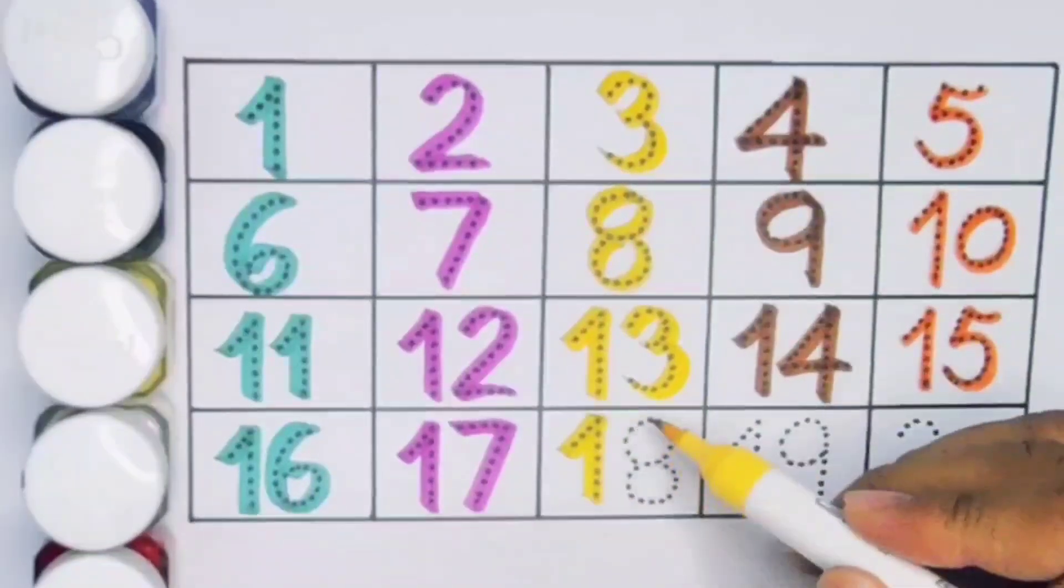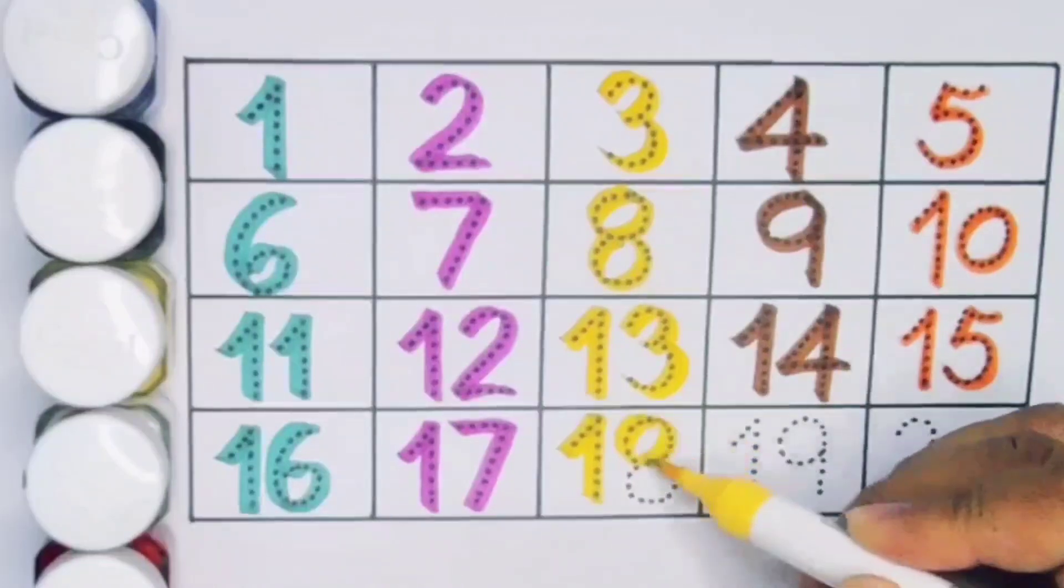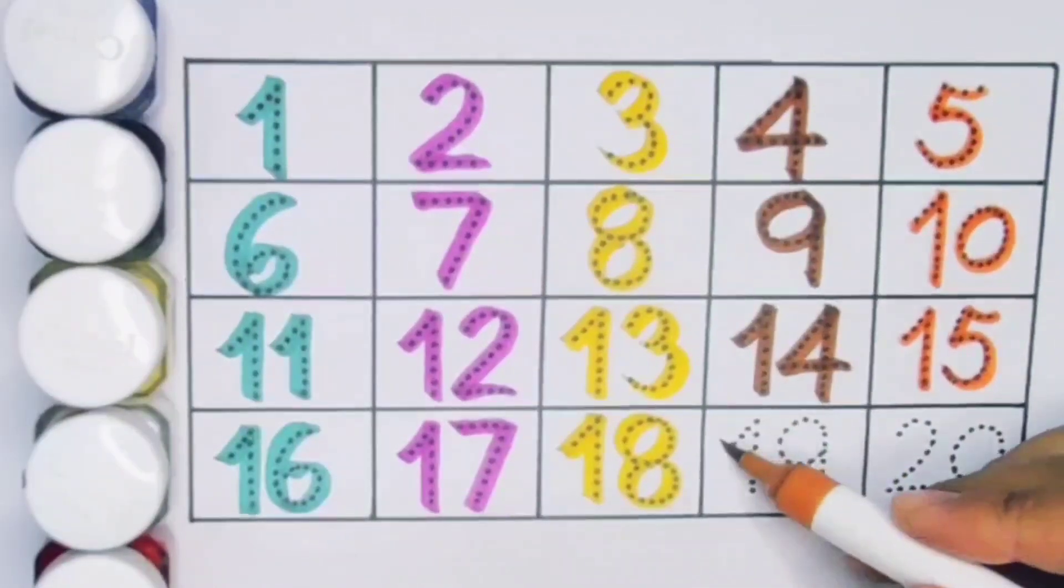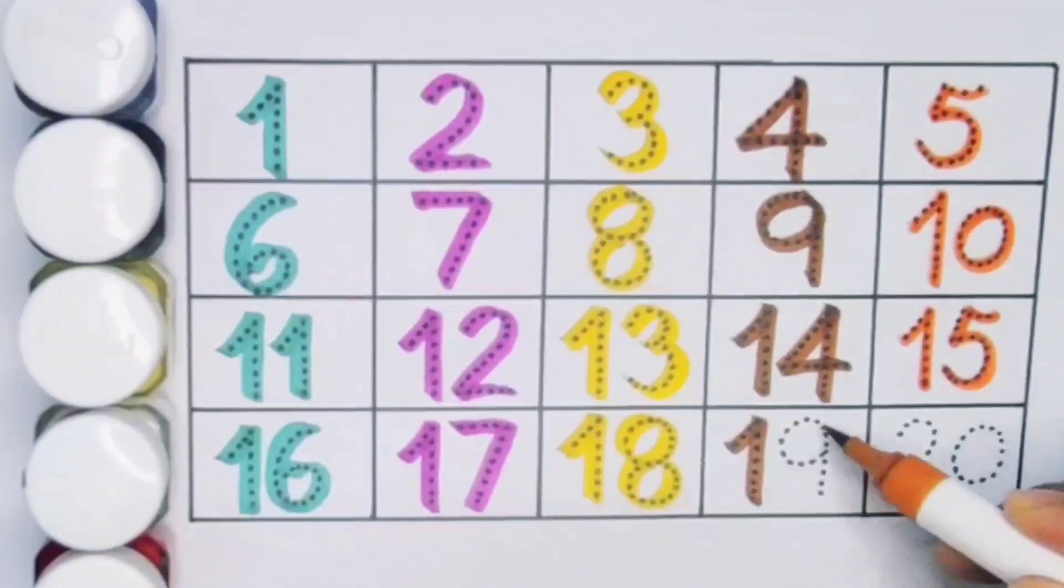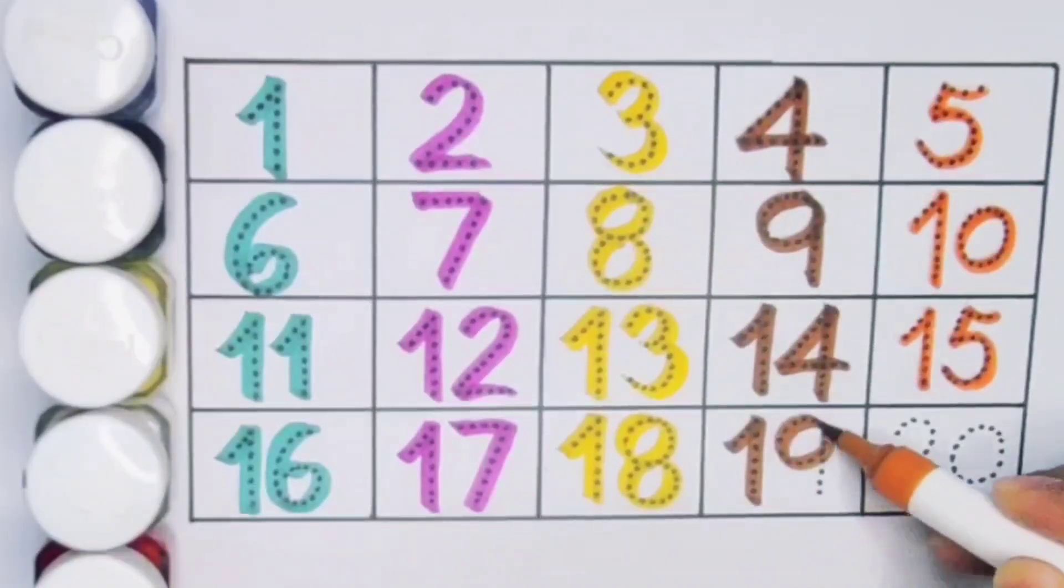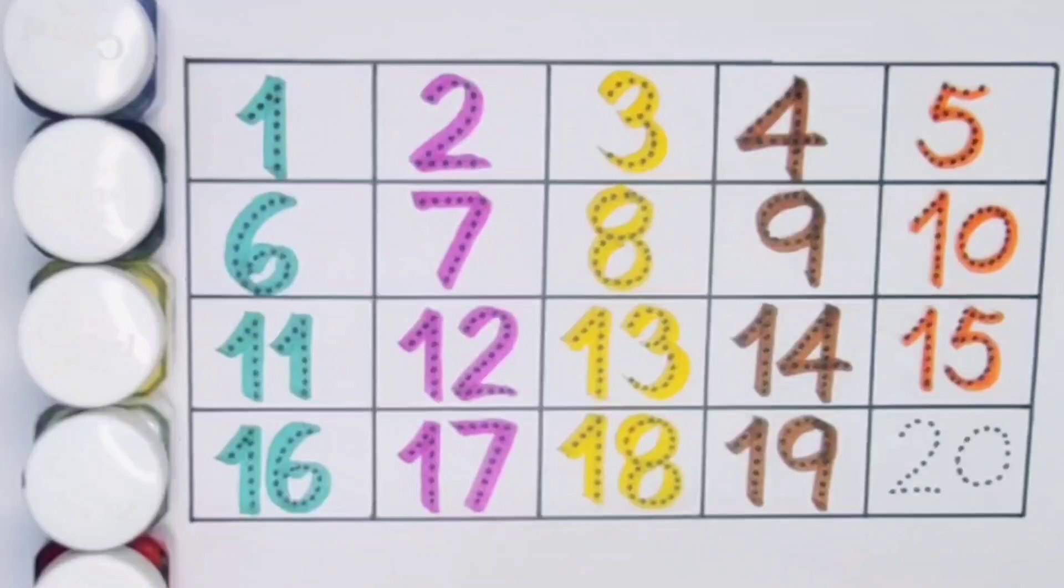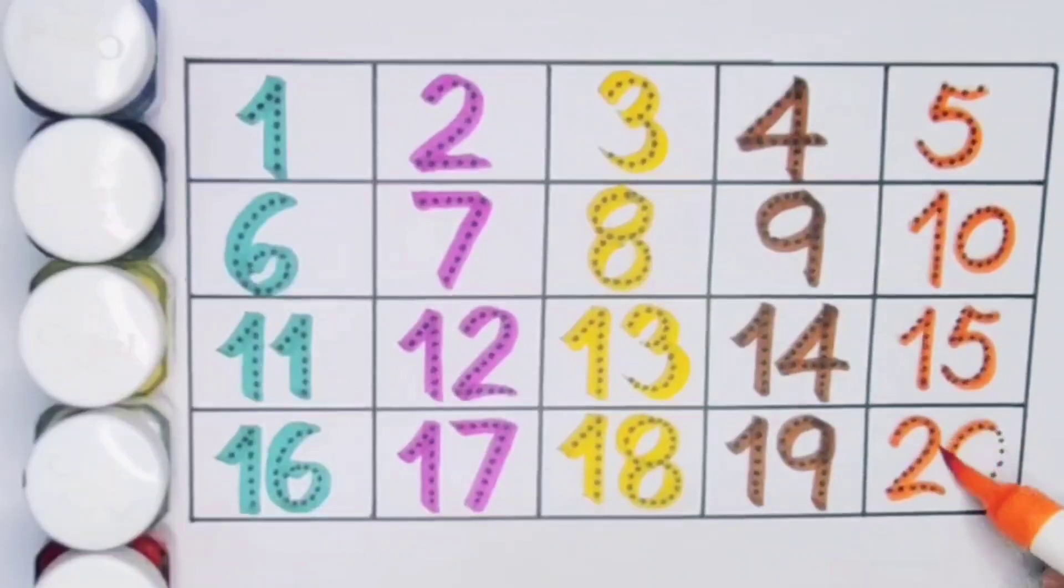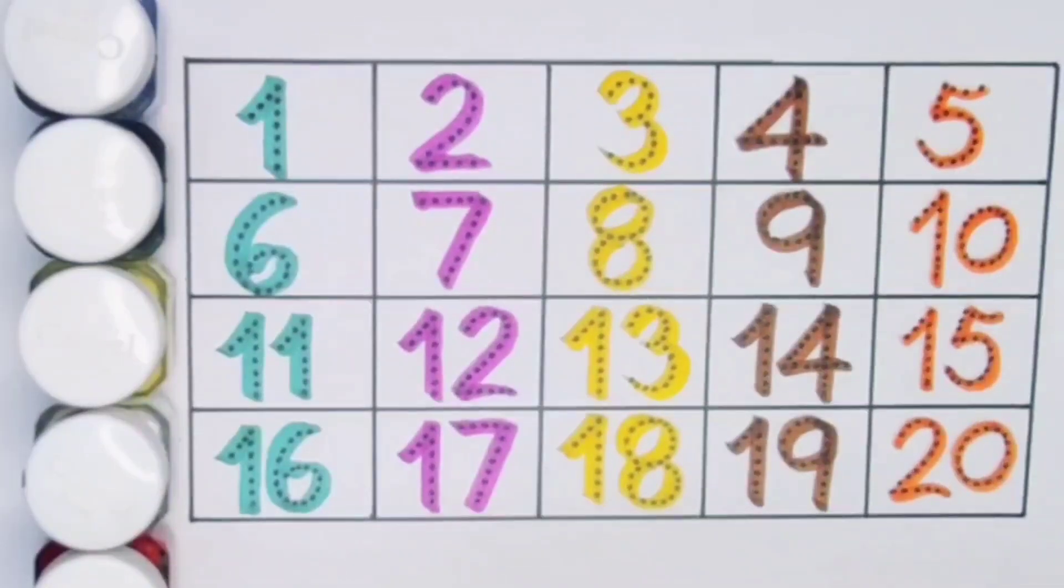Number 18. Next kids 19, 1-9-19. Number 19. Next kids 20, 2-0-20. Number 20.